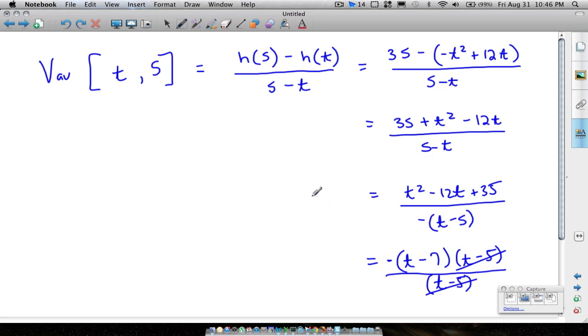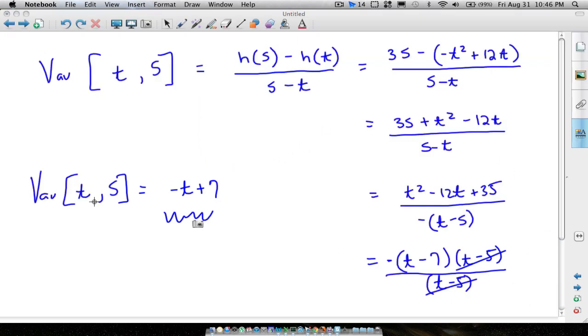Will be the formula negative t plus 7, because I distributed the t back into the, or distributed the negative back into this after I cancelled out the t minus 5s. So this formula right here will tell us all our average velocities. Let's see if that really works.